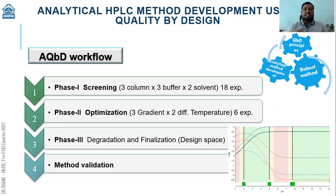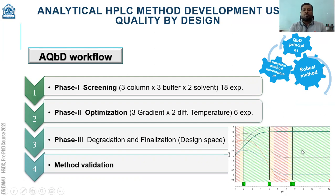We then perform gradient changes with different temperatures, and in phase three we perform degradation studies in order to check for any unknown or known degradation impurities. If those appear, we perform the separation and finalize the procedure. Based on this finalized procedure, we generate a design space, which gives us an idea of the range where the method is perfectly suitable and what optimum changes can be performed within that range so that the method does not need to be re-optimized.